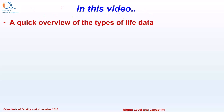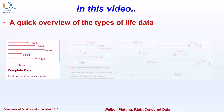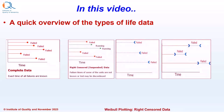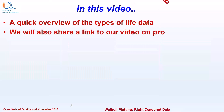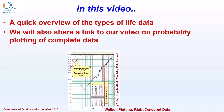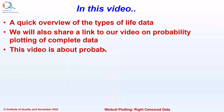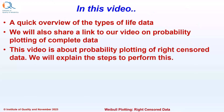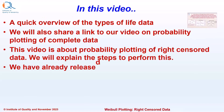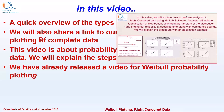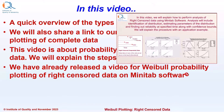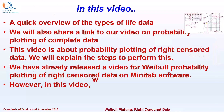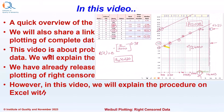In this video, we will have a quick overview of the types of life data: complete, right censored, interval censored, and left censored. We will also share a link to our video on Probability Plotting of Complete Data. This video is about Probability Plotting of Right Censored Data, and we will explain the steps to perform this. We have already released a video for Weibull Probability Plotting of Right Censored Data but on Minitab software. However, in this video, we will explain the procedure on Microsoft Excel with an illustration example.